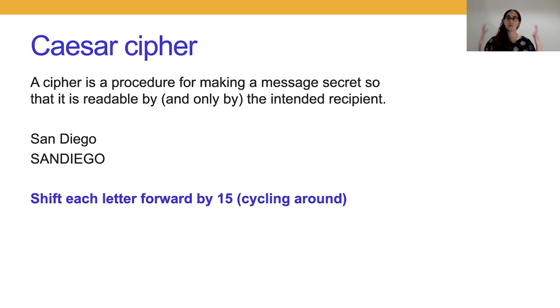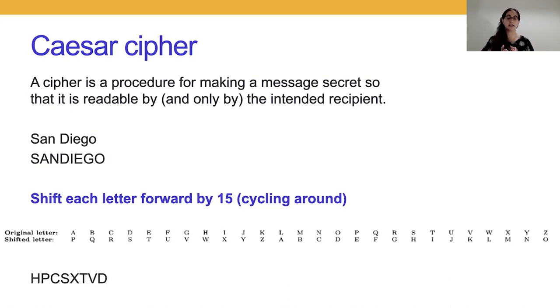Now you might remember that the English alphabet has 26 letters, and if I count forward from S 15, I'm going to fall off the end of the alphabet, and I don't want to do that. So with a Caesar cipher, we count forward and then cycle around. What that gives us is an association from each original letter to a shifted letter. So looking up where S gets assigned, it will become H, A will become P, and we get the coded message HPCSXTVD.